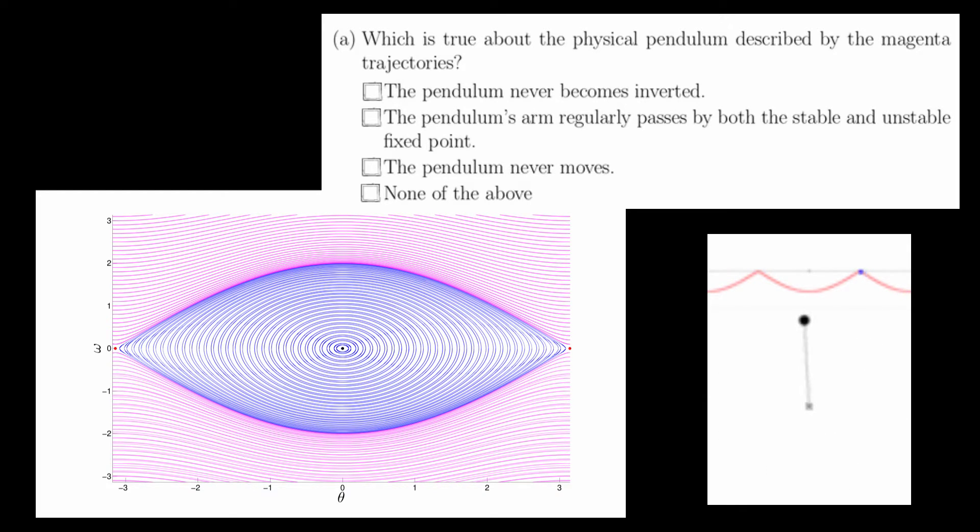The first option is that the pendulum never becomes inverted, but this cannot be the case. Notice that each magenta trajectory passes through theta equals minus pi and pi, which is the unstable fixed points. Because it passes through the unstable fixed points, we know at some point in time the pendulum has to become inverted and this answer cannot be correct.